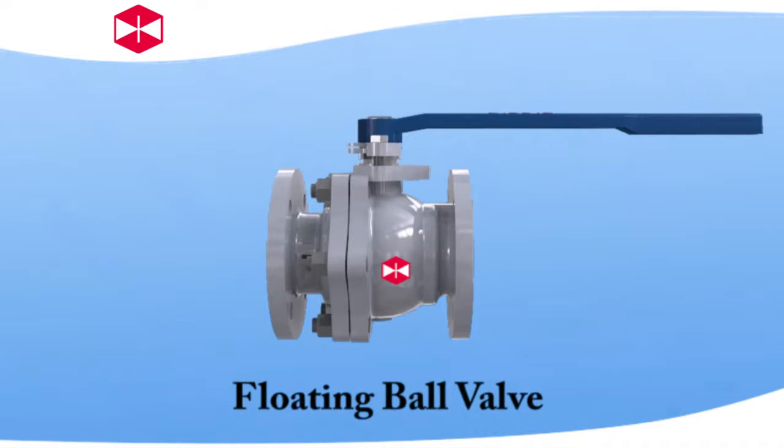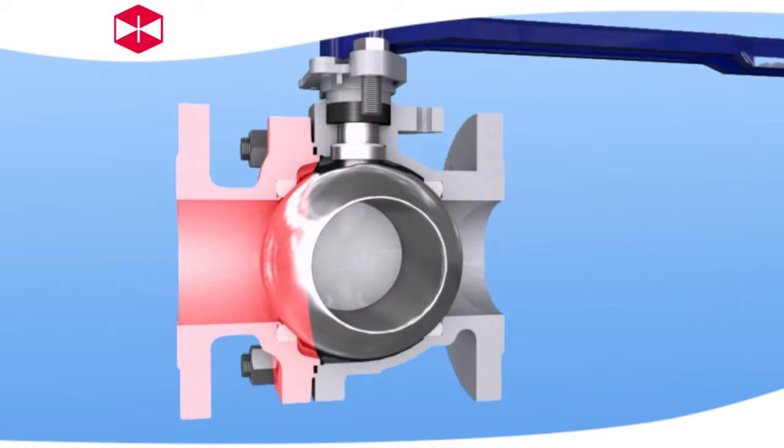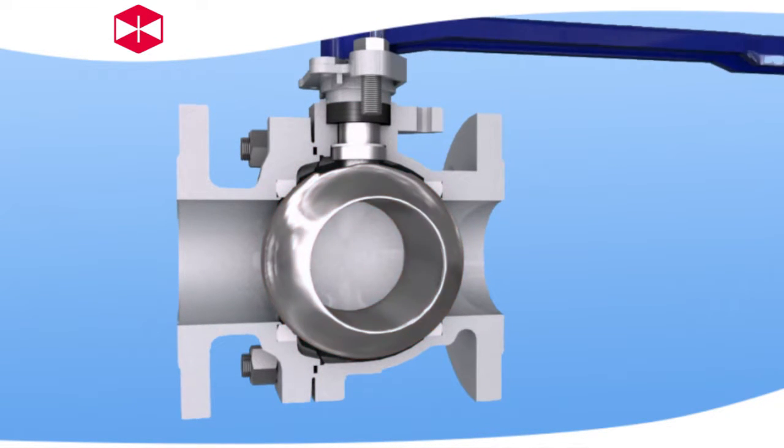Floating ball valve has two sealing seats. There is a ball between the seats. The ball can rotate inside the seat ring by stem.